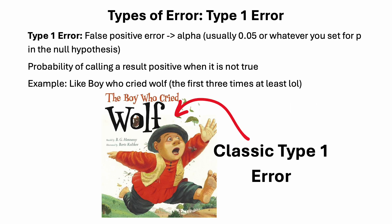Let's start off by talking about types of error, starting with type 1 error. Type 1 error is also known as false positive error — this is the type of error when you call a result positive when it actually is not. False positive error or type 1 error is represented by alpha, which we usually set to 0.05, and this is essentially the rate at which we call false positives.